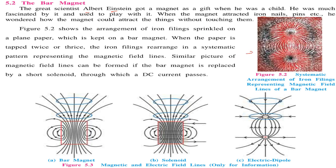This figure shows the arrangement of iron filings sprinkled on a plain paper which is kept on a bar magnet. When the paper is tapped twice or thrice, the iron filings rearrange in a systematic pattern. See, this is a proper pattern.